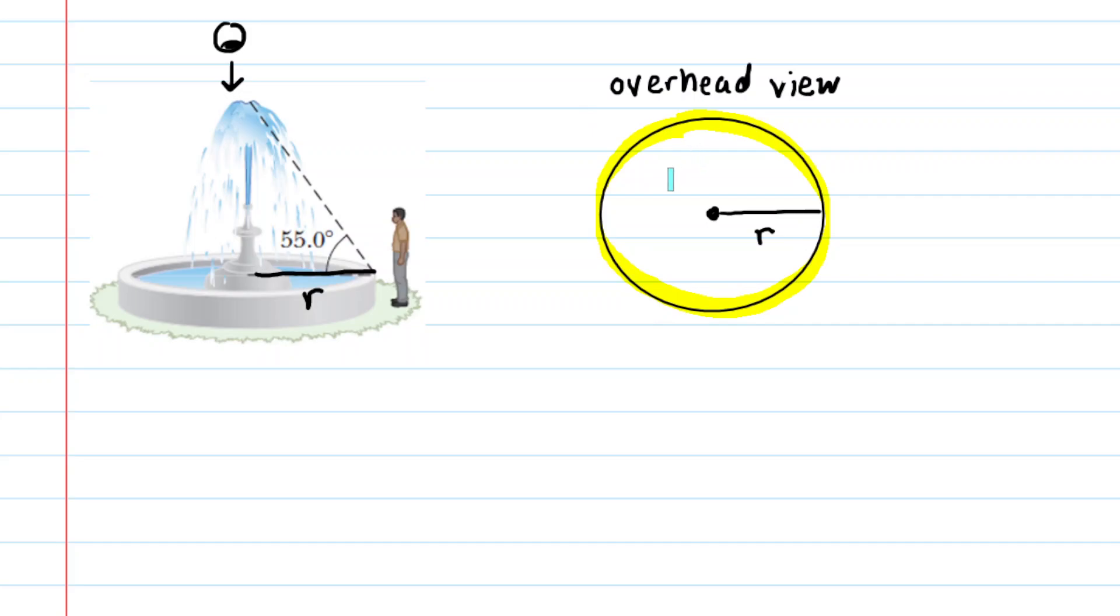What we'll notice is that we can use the circumference to find the radius of that circular path. On the original picture the radius would represent this dimension right here.